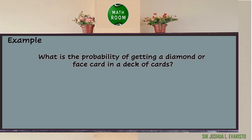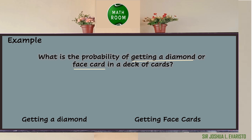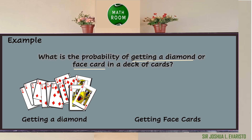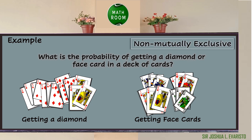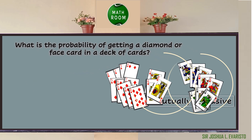Given for example, what is the probability of getting a diamond or face card in a deck of cards? The two events are event A — getting a diamond — and event B — getting a face card. The possible outcomes of event A are 1, 2, 3, 4, 5, 6, 7, 8, 9, 10, Jack, Queen, and King of Diamonds, so we have 13 possible outcomes for event A. So we can say that this is a non-mutually exclusive event. Moreover, we can illustrate it using two overlapping circles.